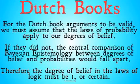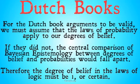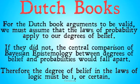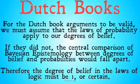We also remember that with the Dutch book arguments, for them to be valid, we must assume that the laws of probability apply to our degrees of belief, or that they map perfectly onto our degrees of belief. If there is a certain probability of something, we must have that degree of belief in that thing to be rational. If they did not, the central comparison of Bayesian epistemology between degrees of belief and probability would fall apart. Therefore, the degree of belief in the laws of logic must be 1, or certain.